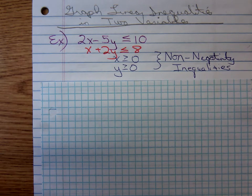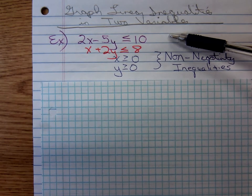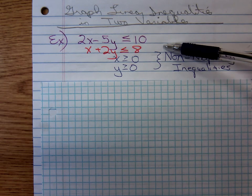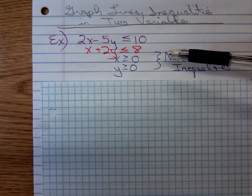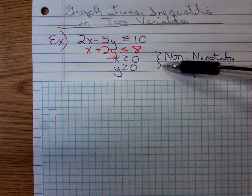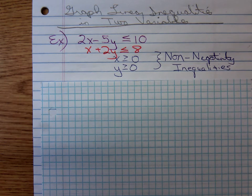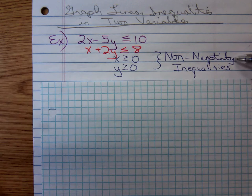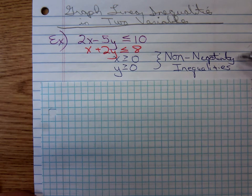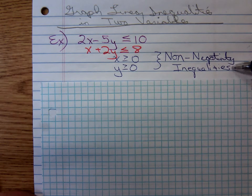So here's the problem: 2x minus 5y is less than or equal to 10, x plus 2y is less than or equal to 8. And notice these last two constraints, x greater than or equal to 0 and y greater than or equal to 0. These last two are called non-negativity inequalities or non-negativity constraints.